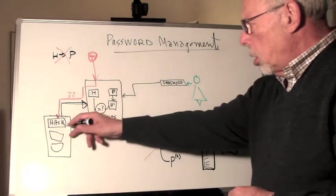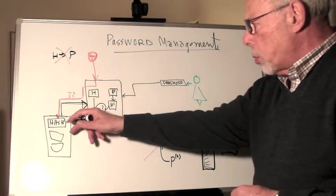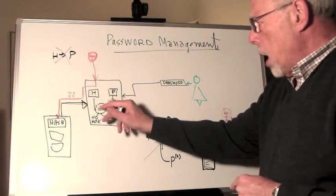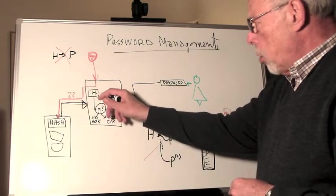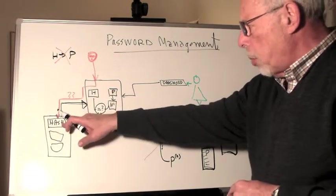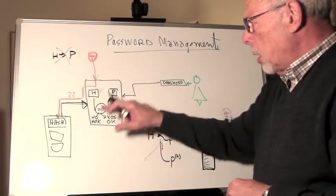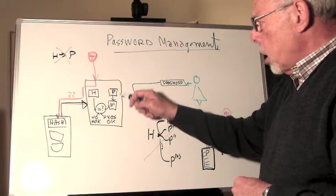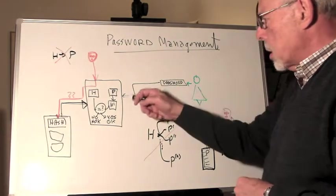The server will take the password, will pull out the corresponding hash associated with Alice's name, and compare the hash from the file to the hash that the server computes from the password that Alice submits.